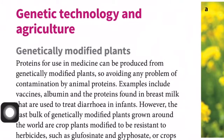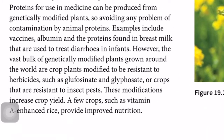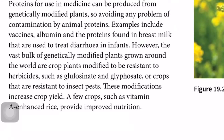Genetic technology and agriculture: proteins for use in medicine can be produced from genetically modified plants, so avoiding any problems of contamination by animal proteins. Examples include vaccines, albumin, and the proteins found in breast milk that are used to feed dairy-intolerant infants.